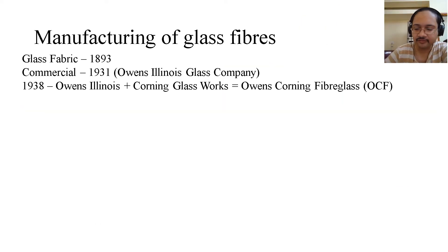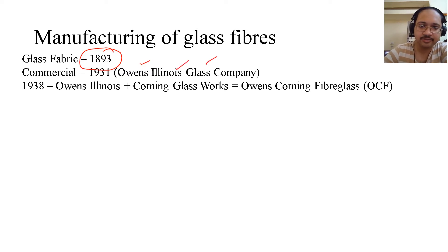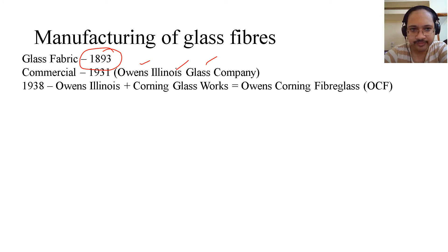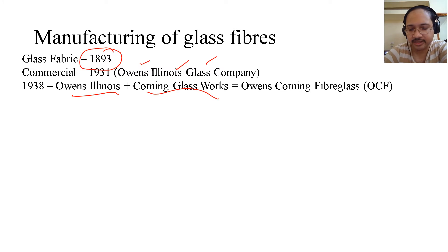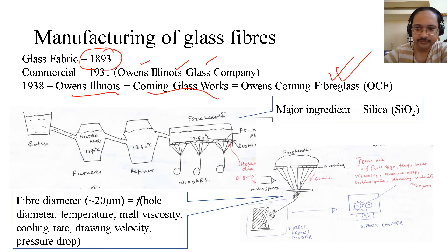Now, coming to the manufacturing of glass fibers. Glass fabric was discovered as early as 1893. It was then commercialized by the famous Owens Illinois Glass Company in 1931. Then Owens Illinois and Corning Glass Works merged together in 1938 to form the famous OCF — Owens Corning Fiberglass.